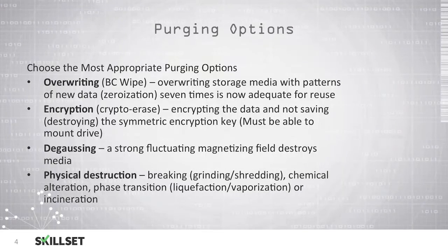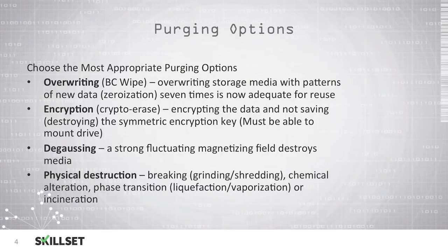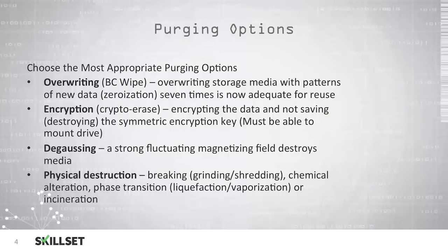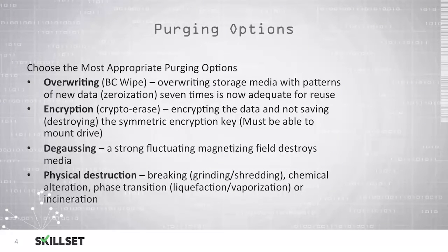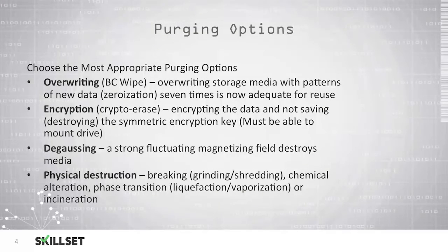Degaussing uses a strong magnetic field to destroy media such as hard drives, but you should remember that degaussing does not work on solid-state drives or hybrid drives because they store data with flash memory rather than using platters. The best method would be physical destruction, where we physically break the storage device by grinding or shredding it, using chemicals to alter the device, or using some type of phase transition such as liquefying or vaporizing the device.